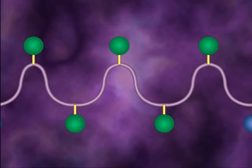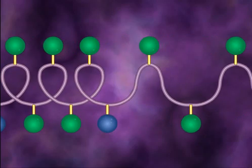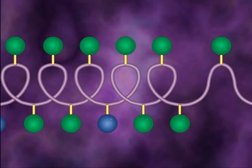Secondary structure is the helix that the protein chain curls into as a result of hydrogen bonds and other weak forces.